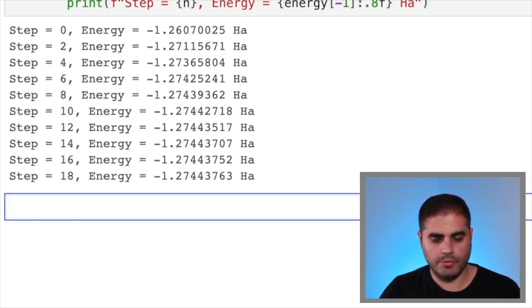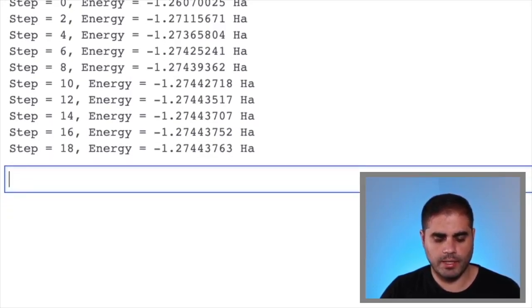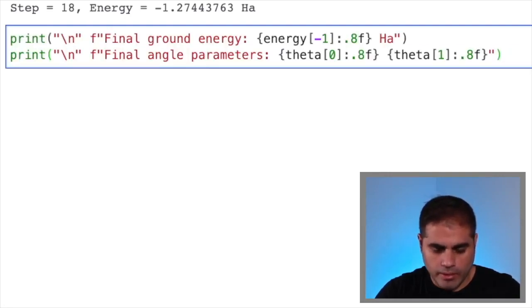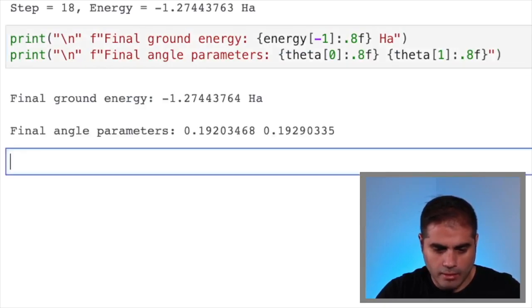And we see after 18 steps, it has converged to minus 1.27, which is much less than the minus 1.24 that we guessed from the Hartree-Fock state. Now we also write some print statements in order to see what the final value of the ground energy and the optimizing parameters are. So here are the print statements. So let's see what we get in the end. The final ground energy is minus 1.27, as we already knew, and the final angle parameters are 0.192 and 0.193, respectively.